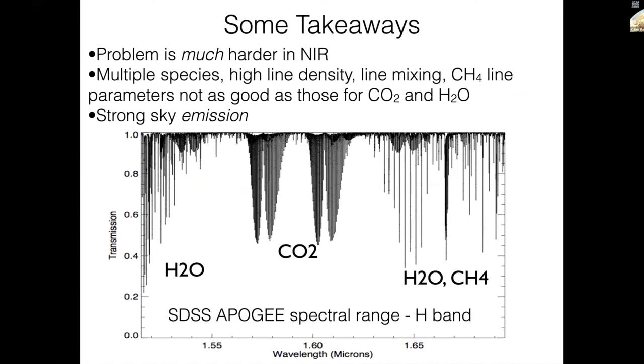I think we can all agree that this problem is going to be much harder in the near infrared. This is a bit of the H band, where the SDSS APOGEE spectrograph operates, and you can see it's kind of a morass. We have H2O, we've got very densely packed CO2 lines, there's methane mixed in there. So you have high line density, you have line mixing, and maybe the CH4 parameters, maybe to a lesser extent, the CO2 parameters are not as well understood as the water lines in our atomic databases. So I think in the infrared, this is a big problem. Of course, there's also strong sky emission, which I haven't addressed really here at all. Superimposed across this entire wavelength range, there are very strong OH emission features.